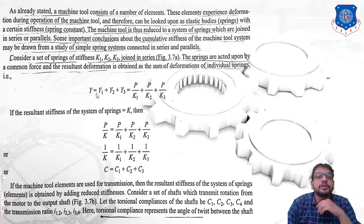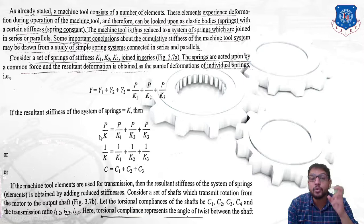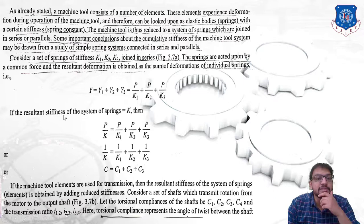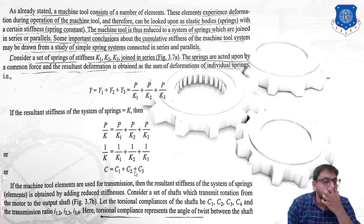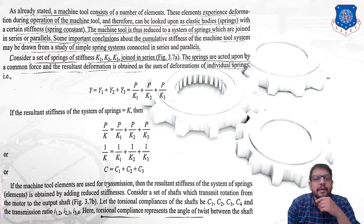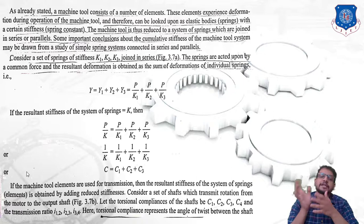Since force p is constant in a series connection, we can write p/K = p/k1 + p/k2 + p/k3, where K is the total resultant stiffness. Cancelling p, the final equation becomes: 1/K = 1/k1 + 1/k2 + 1/k3. Since compliance C is the inverse of stiffness, this can be written in terms of compliance as: C = C1 + C2 + C3.